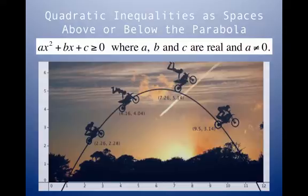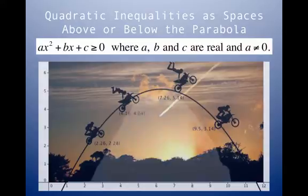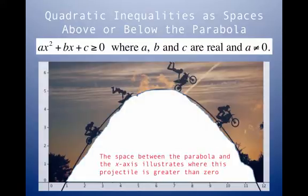Let's go back to the picture we saw last week with the motorcycle guy jumping, where we get some sort of parabola: ax² + bx + c. We understand the quadratic function and how to find x-intercepts, but what does it mean to turn it into an inequality? When we write ax² + bx + c ≥ 0, the white space between the parabola and the x-axis is where the parabola is greater than zero.